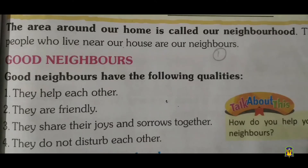Let us recall what topics we learned today. The area around our home is called our neighborhood. The people who live near our house are our neighbors. We also learned some good qualities of neighbors: they help each other, they are friendly, they share their joys and sorrows together, and they do not disturb each other. You should study any two qualities of neighbors.